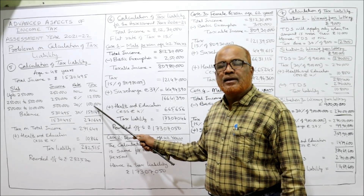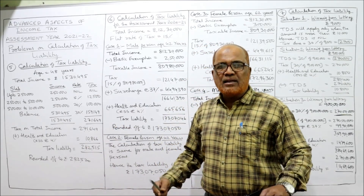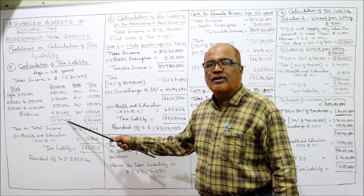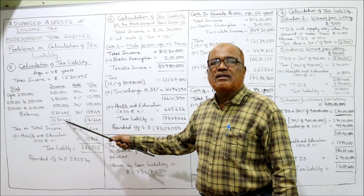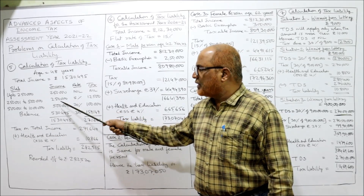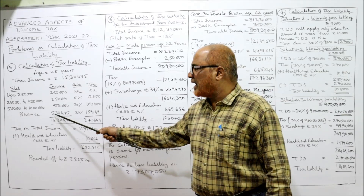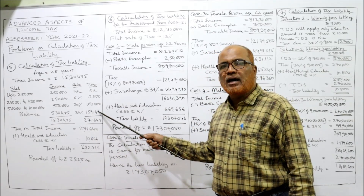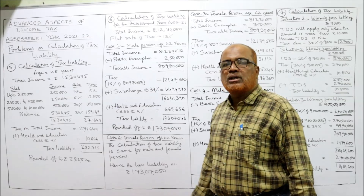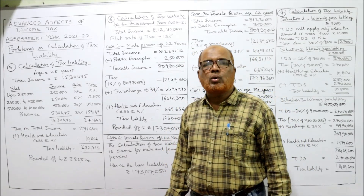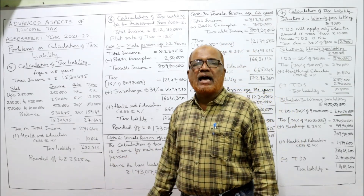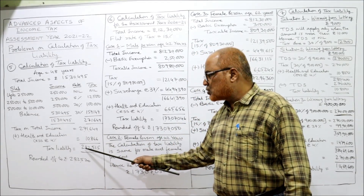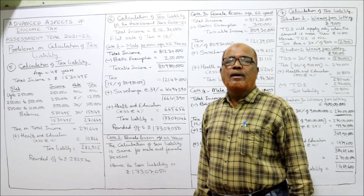For the balance of income, the tax rate is thirty percent. To find the balance: take total income 15,34,495, subtract the first three slabs — minus two lakh fifty thousand, minus two lakh fifty thousand, minus five lakh — the balance is five lakh thirty thousand four hundred ninety-five. Thirty percent of this balance gives 1,59,149. The total tax on total income comes to two lakh seventy-one thousand six hundred forty-nine. On this tax we add health and education cess at four percent, which gives ten thousand eight hundred sixty-six. The tax liability comes to two lakh eighty-two thousand five hundred fifteen.